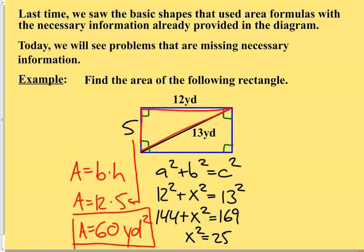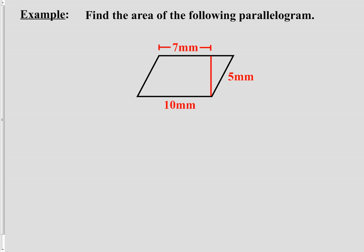Not difficult, but definitely a two-step problem — you have to solve one thing before you can solve the next. Let's take a look at another quadrilateral. Find the area of the following parallelogram. The first question is to correctly identify the shape — they called it a parallelogram. The formula is the same: area of a parallelogram equals base times height. Let's see if we can find the base and height information in the picture.